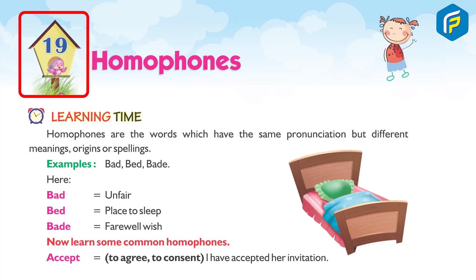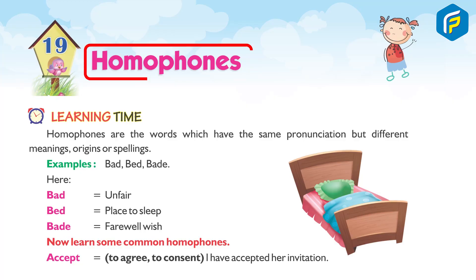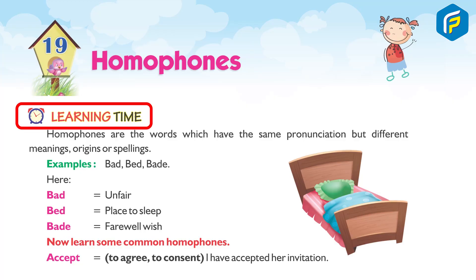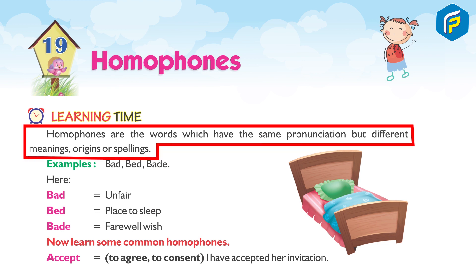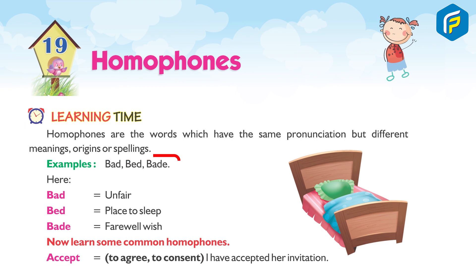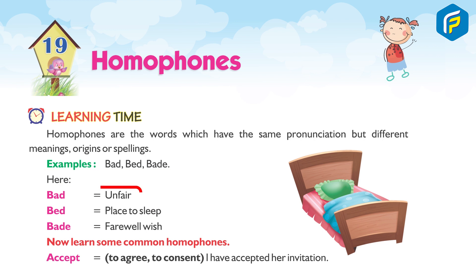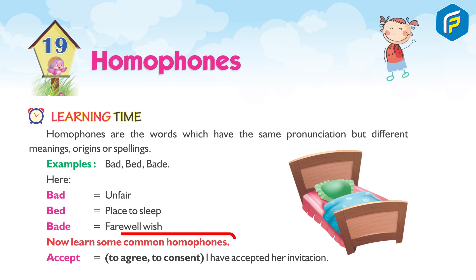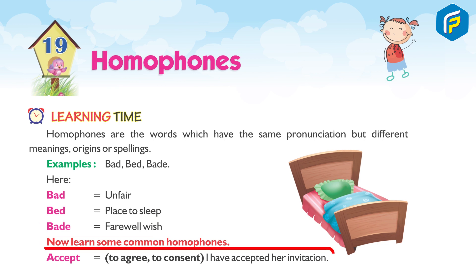Chapter 19: Homophones. Learning time. Homophones are words which have the same pronunciation but different meanings, origins, or spellings. Examples: bad, bed, bade — now learn some common homophones.